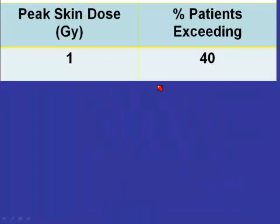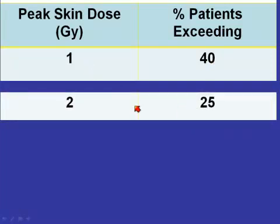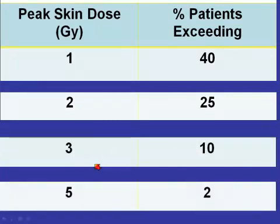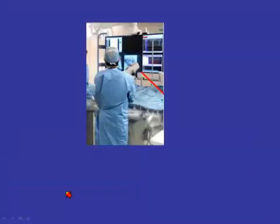When I look at the data that Don has kindly provided, I would say that at US academic medical centers, approximately 40% of patients will exceed a gray, a quarter will exceed two gray, 10% will exceed three gray, and about 2% will exceed five gray. And I would just mention in passing that at five gray, I would expect there to be some kind of — not major, but a definite — radiation burn.